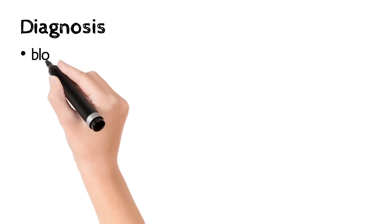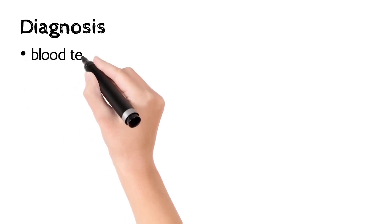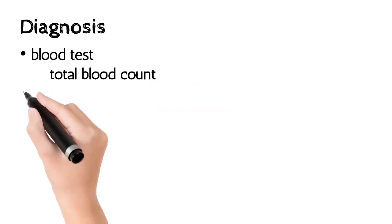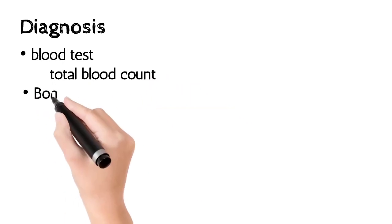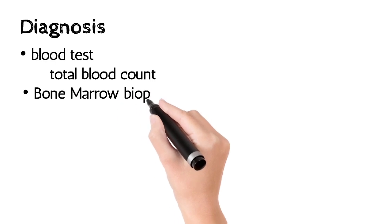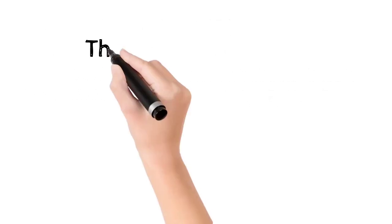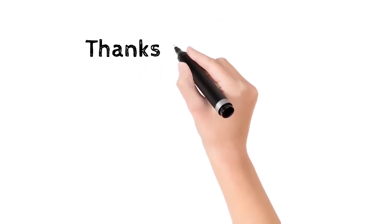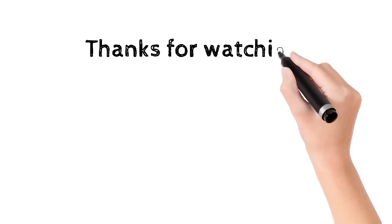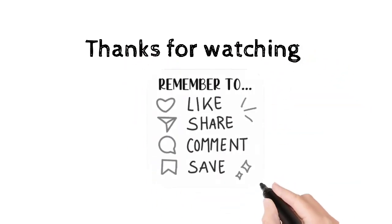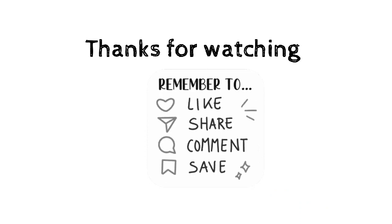For the diagnosis of polycythemia, the two major tests are: first, a blood test — a total blood count measuring the concentration of RBCs and all blood cells; and second, a bone marrow biopsy.